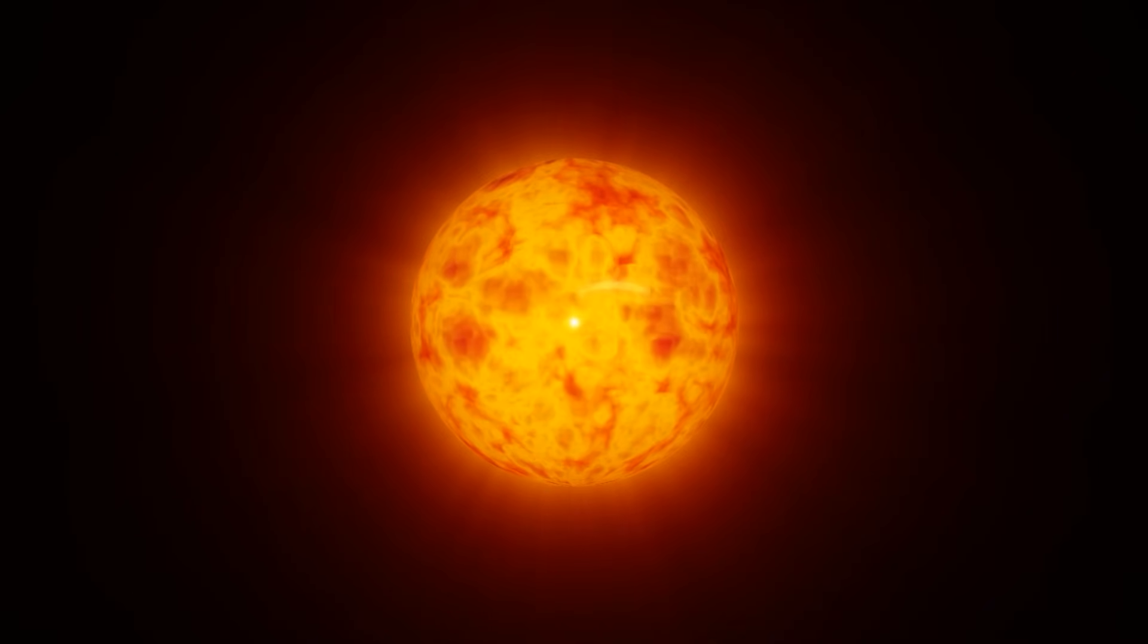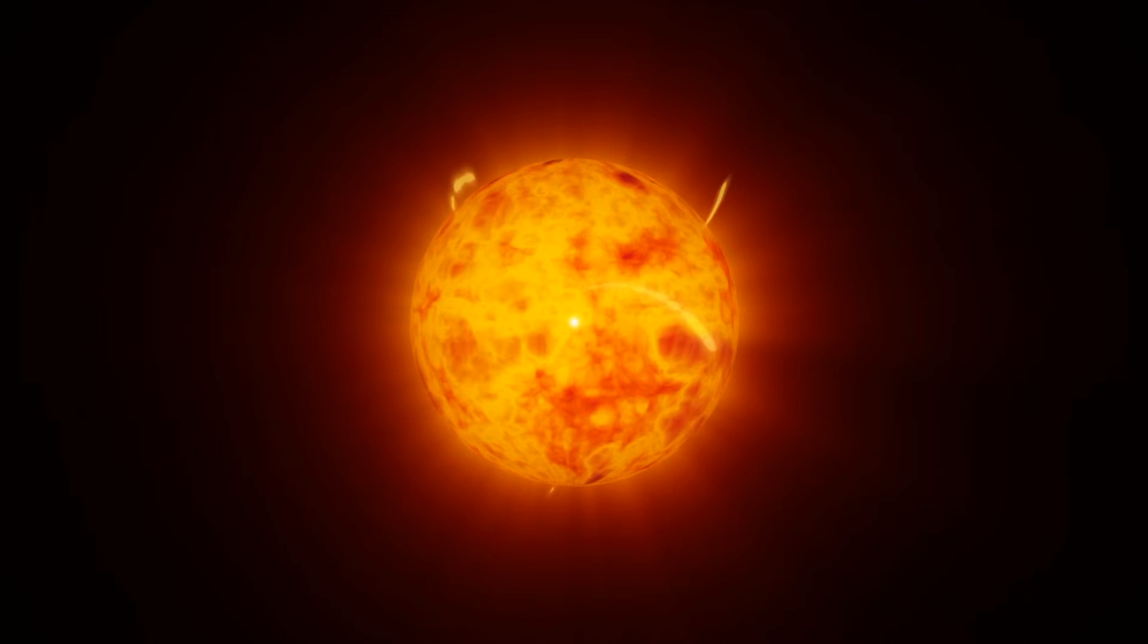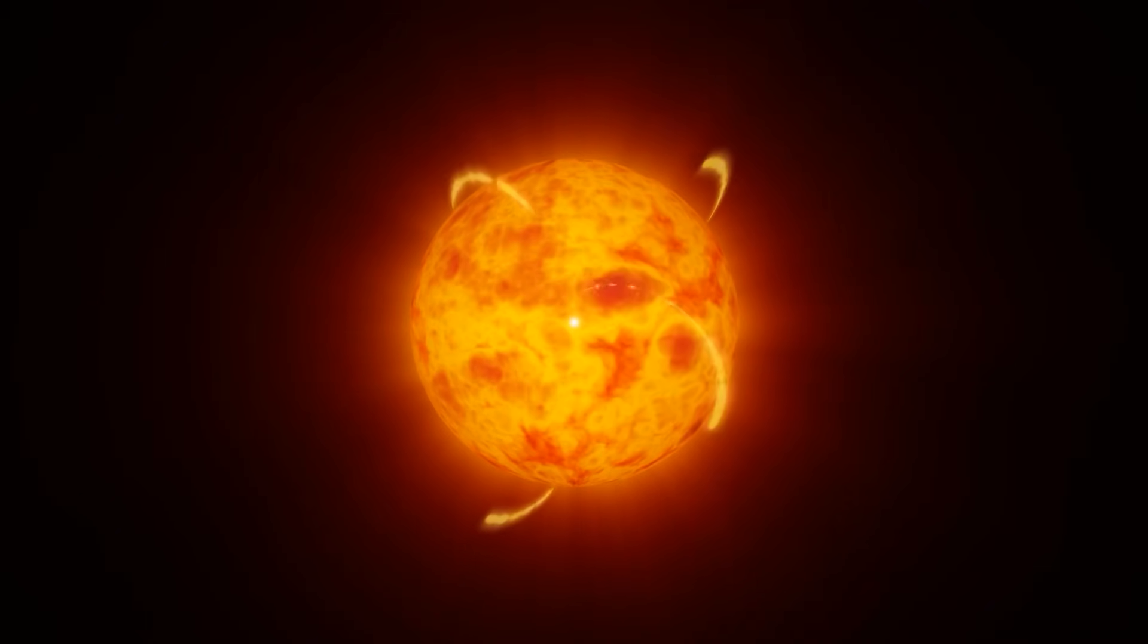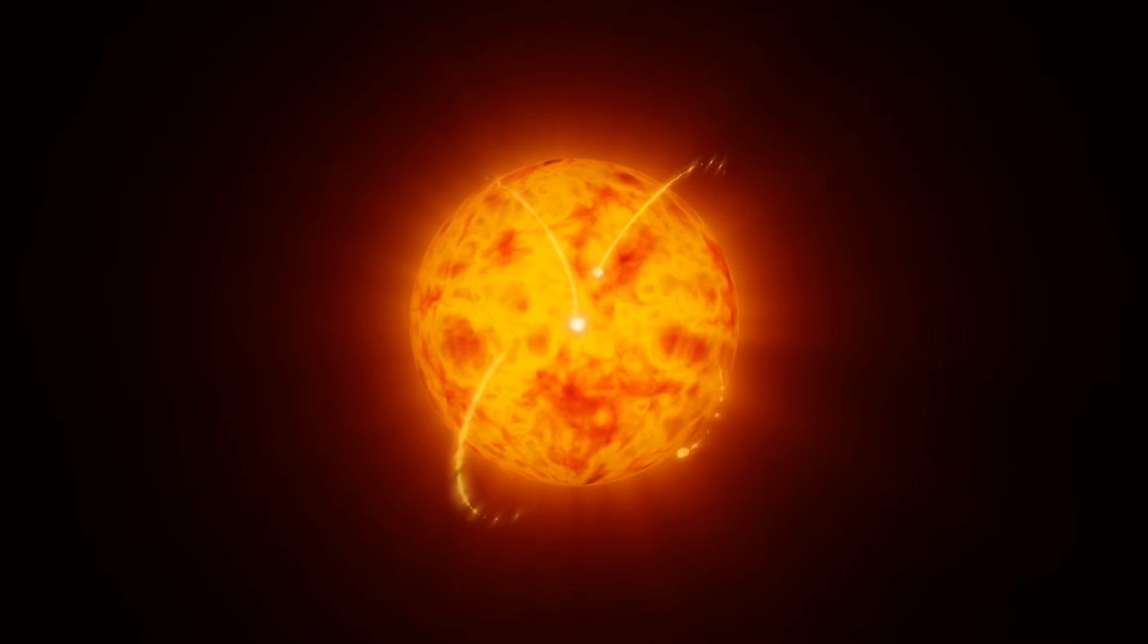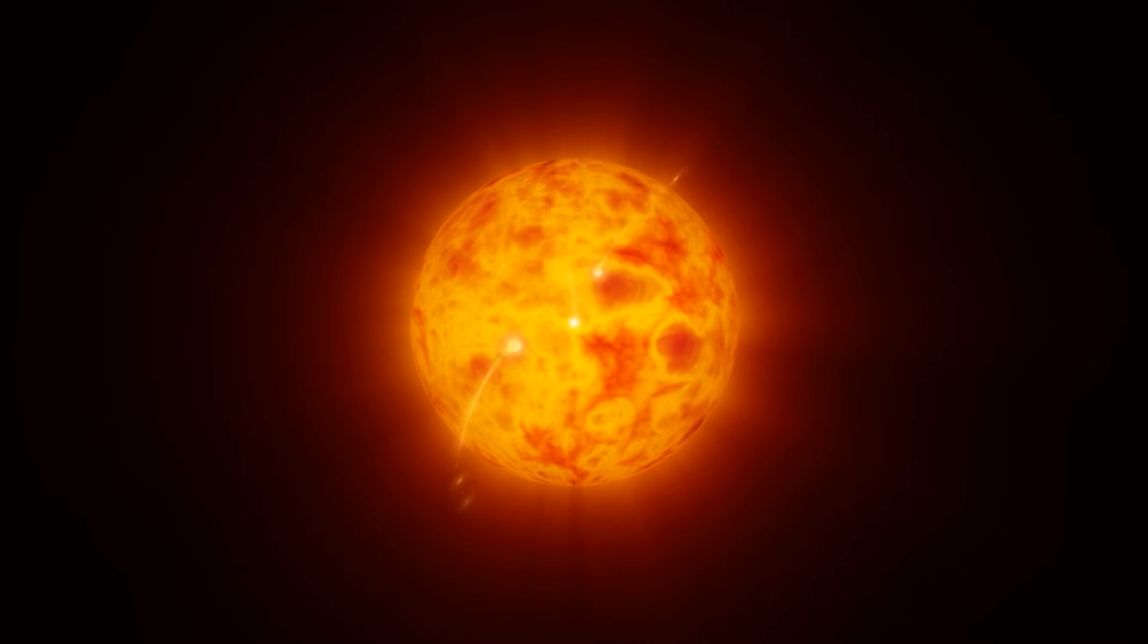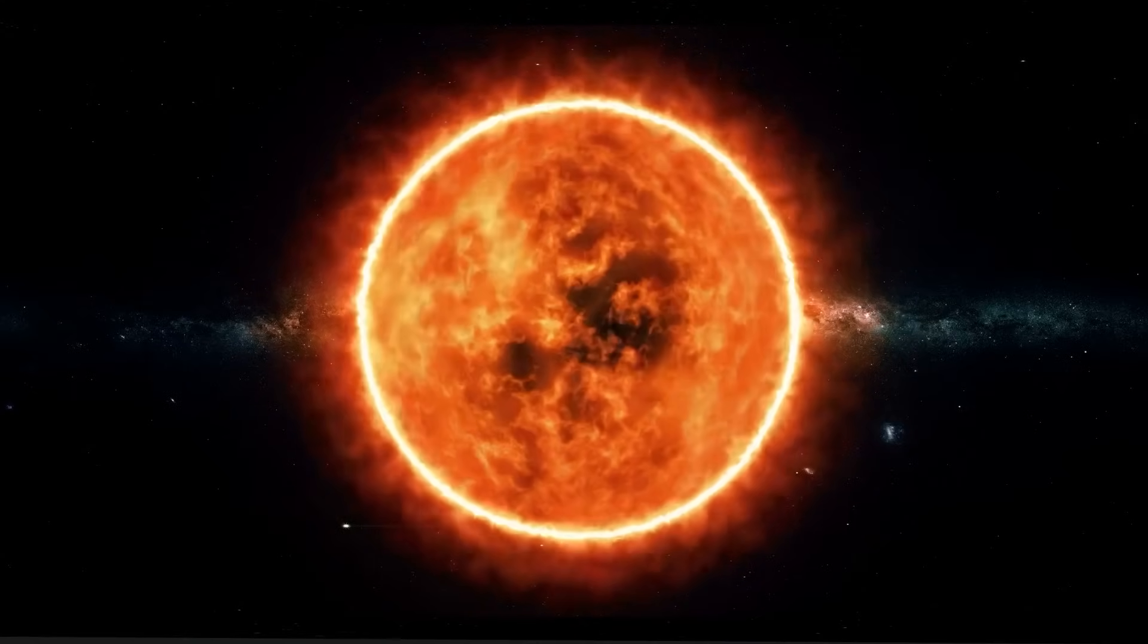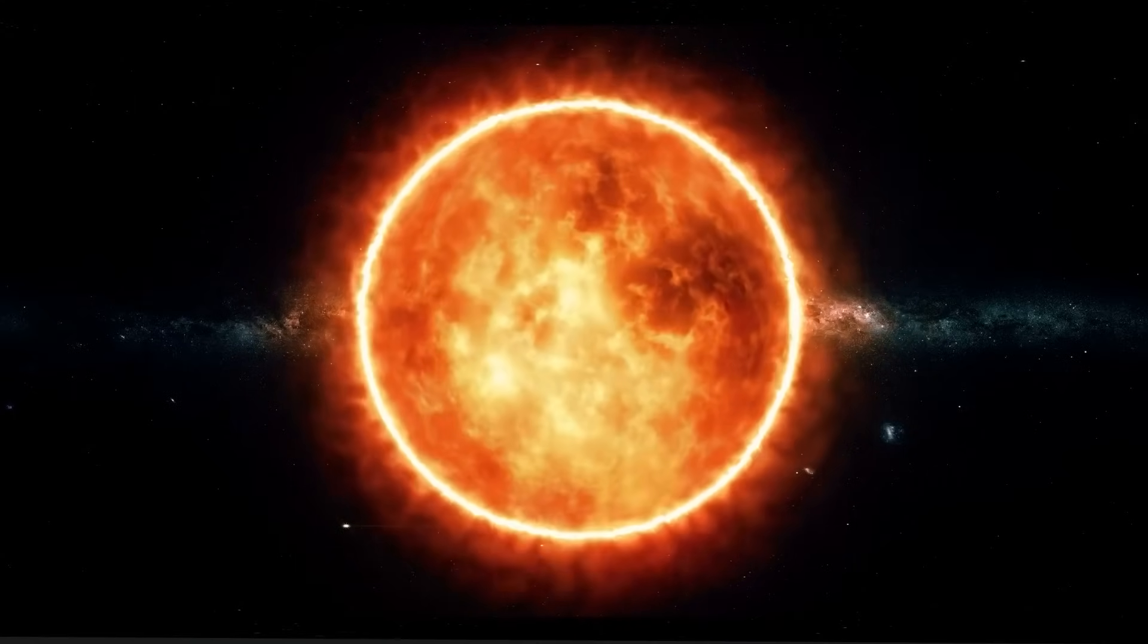Furthermore, the presence of enormous sunspots on Betelgeuse's surface, much larger than those on our sun, could contribute to its dimming. These sunspots, colder and darker regions on the stellar surface, can have a significant impact on the brightness observed from Earth.